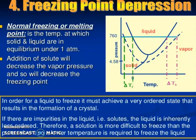If you go through this graph, it will clearly show how much difference there is. This is the ΔTf. So increase in boiling point and decrease in freezing point — that is the importance. Elevation in boiling point is the increase in ΔTb. ΔTb is the difference in boiling point and ΔTf is the difference in freezing point. In order for a liquid to freeze, it must achieve a free ordered state, resulting in the formation of a crystal. If there are impurities in the liquid — that is, solute — the liquid is inherently less ordered. Therefore, a solution is more difficult to freeze than the pure solvent, and a lower temperature is required to freeze the liquid.